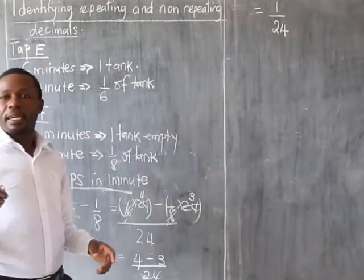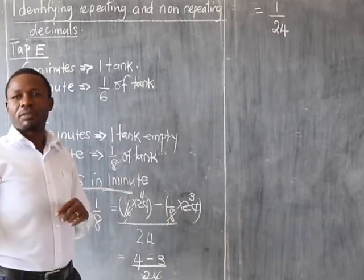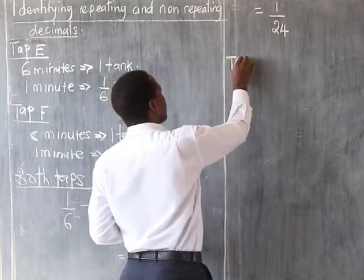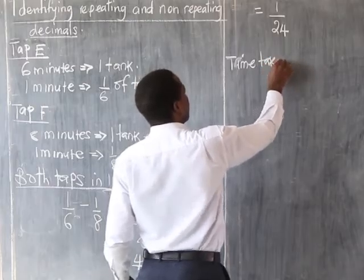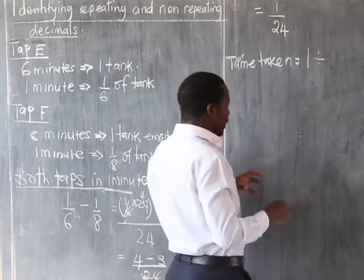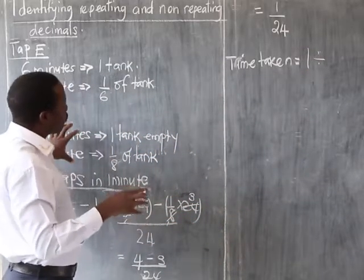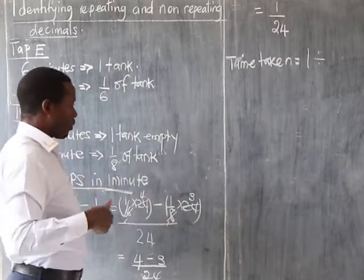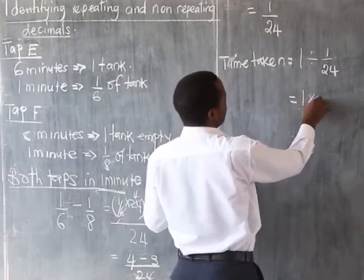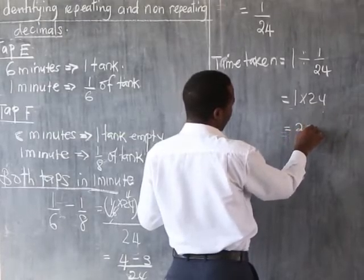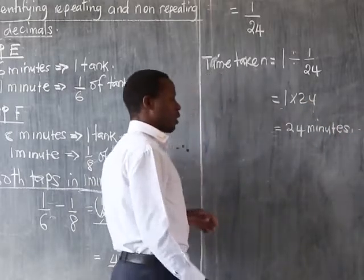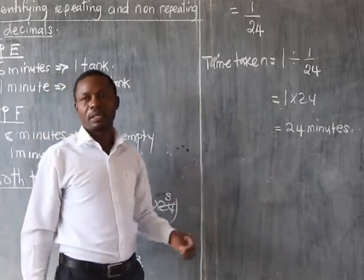The question is asking how long it will take to fill the tank even though one tap is removing water. So we look at the total time taken, which will be one tank divided by the total time taken by both taps in one minute — 1 divided by 1 out of 24. When we simplify, it is 1 times 24, which gives us 24 minutes as our total time. So you answer the question that the tank will be full in 24 minutes.